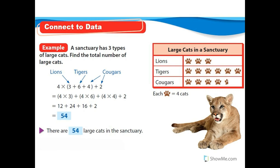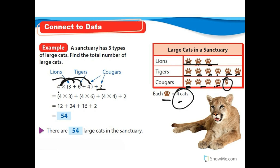Let's connect what we've learned to data. A sanctuary has three types of large cats — find the total number. They have lions: each symbol represents four animals. So four times three for lions, using the distributive property four times six for the next group, and four times four for another, then add two for the half-paw symbol, giving 54 large cats.